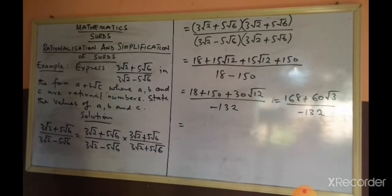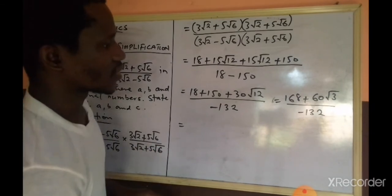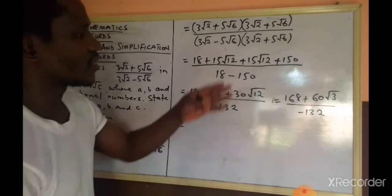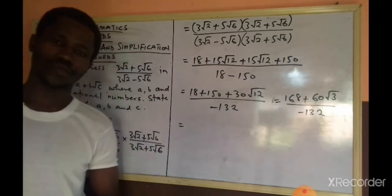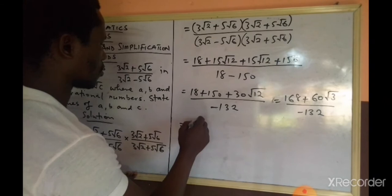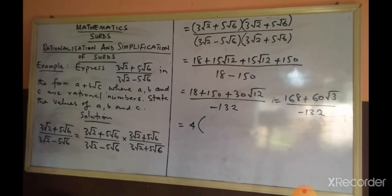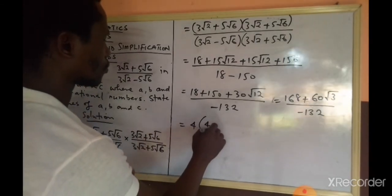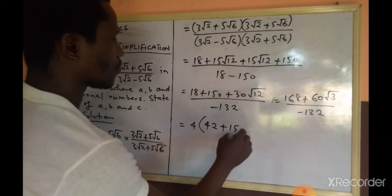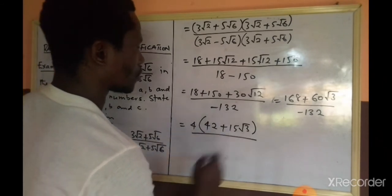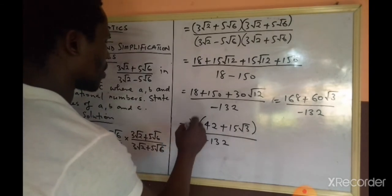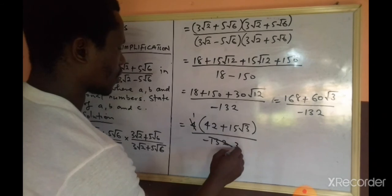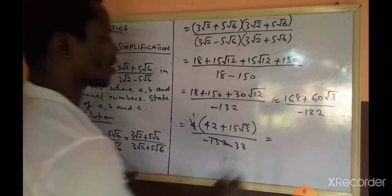Now we have -132 as a denominator, and the numerator we have 168 + 60√3. There is a common factor, and the common factor is 4. And when we bring out 4, we are going to be having 42 + 15√3 all over -132. 4 here will give us 1, 4 here is 33, and so we will be having our answer to be 42 + 15√3 all over -33.